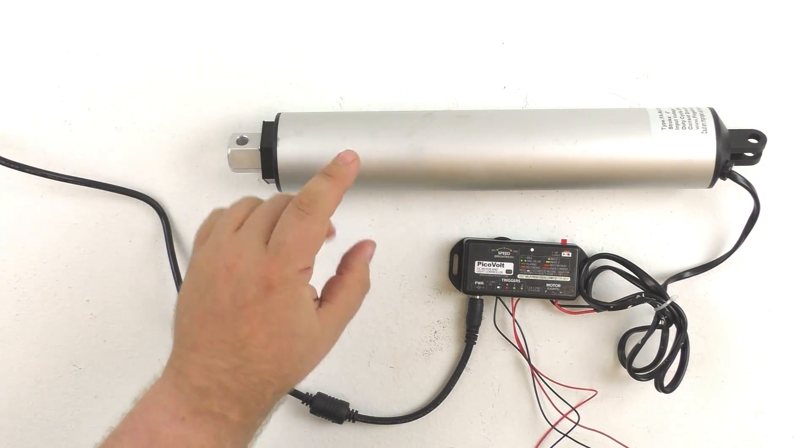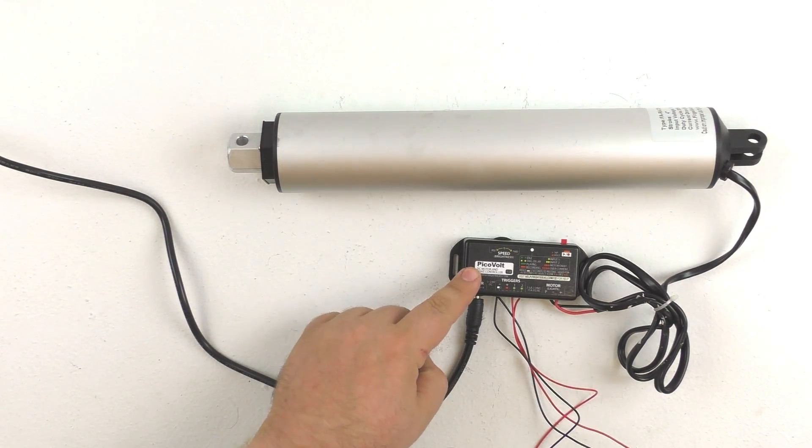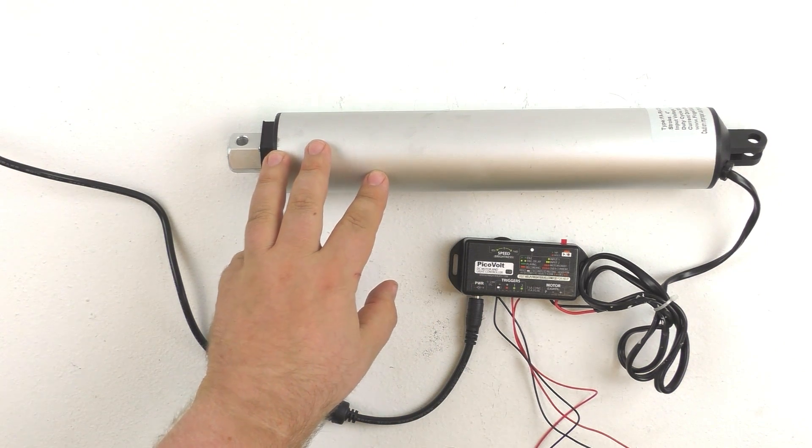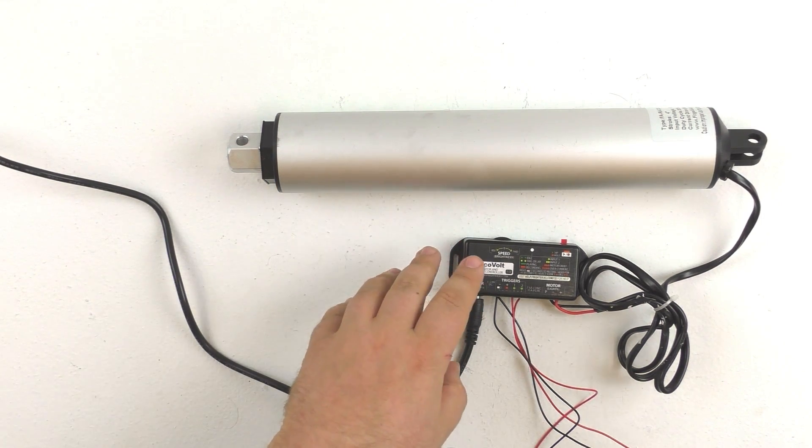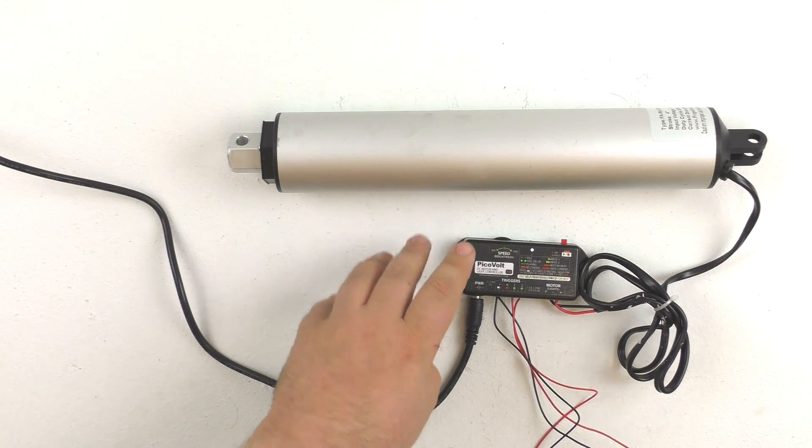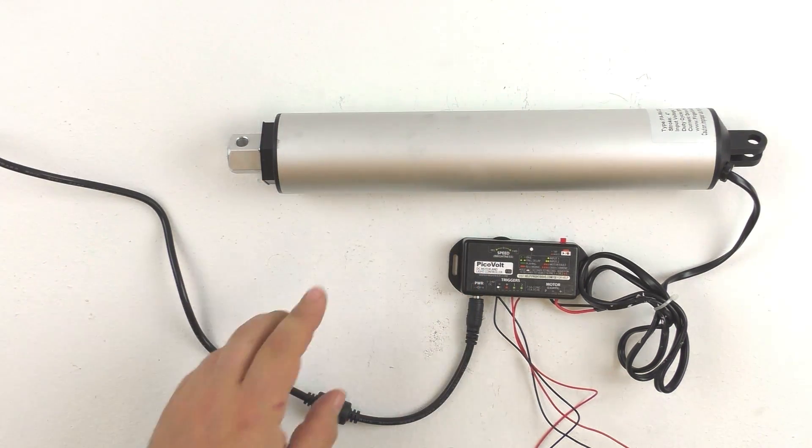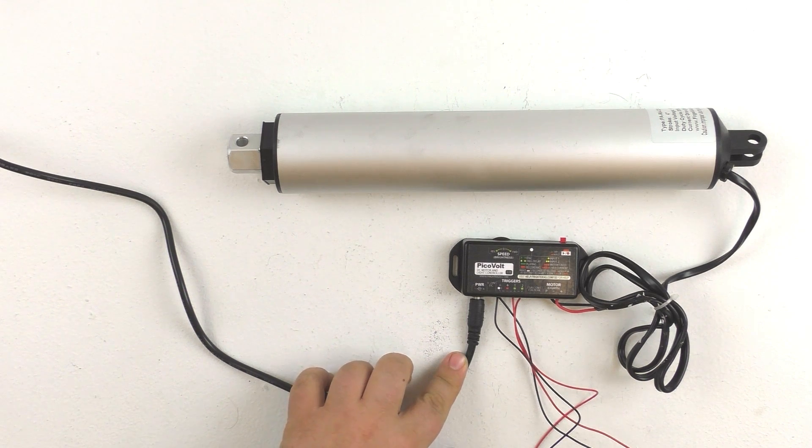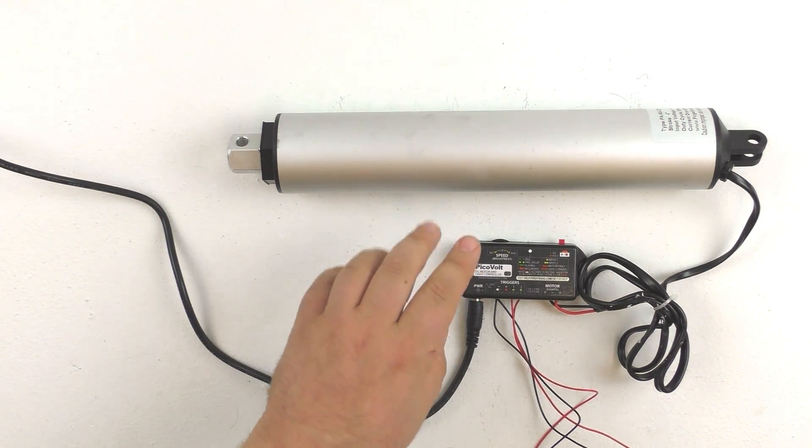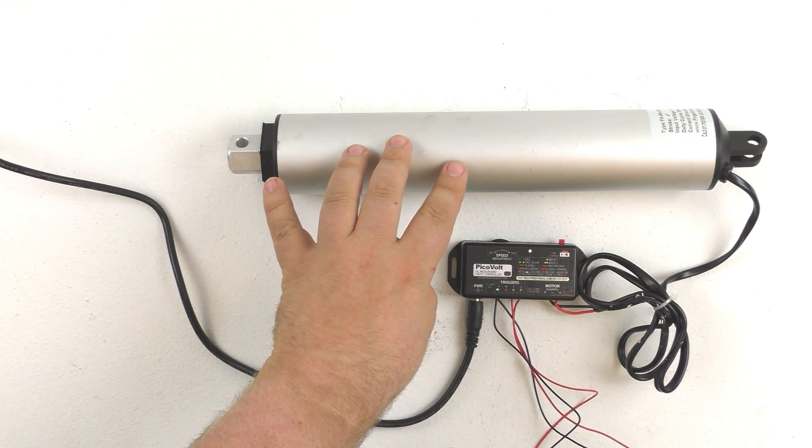To start with you can see that I have a linear actuator attached to the PicoVolt. That is probably one of the biggest new changes that we have to the PicoVolt that it can actually handle higher amperages enough to run a linear actuator. In the past it couldn't do that. So I actually have a 12 volt 10 amp power supply connected to the PicoVolt which is enough to power this linear actuator.